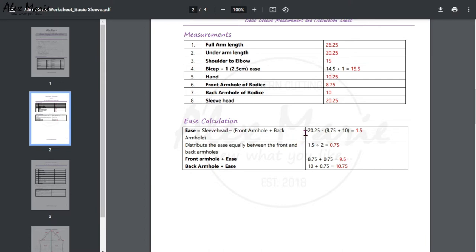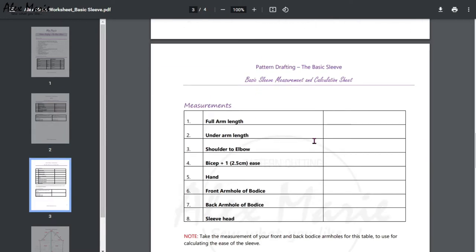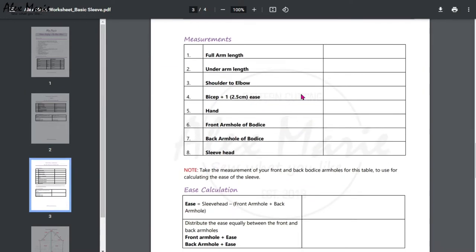For the sleeve head, you're going to take your sleeve minus front and back armhole to get how much ease we have. I'm going to explain all this later in the video when we're doing it, but this is where you're going to fill in those calculations. Basically we want to distribute this ease between the front armhole and back armhole, so it'll make sense then. Next you have a blank page for your own information.